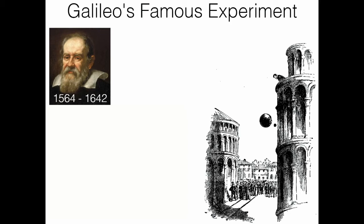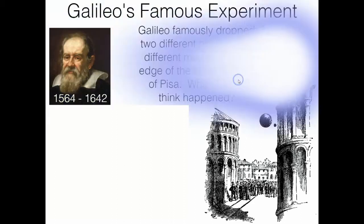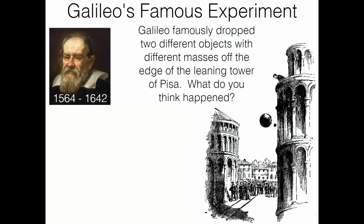Galileo Galilei, right in the height of the Renaissance and early Baroque period, was an amazing scientist. We give him credit for the telescope and many other things in physics. One in particular pertains to us today: Galileo's famous experiment involved dropping two different sized objects with different masses off the Leaning Tower of Pisa in Italy. Most people thought the larger object with more mass would hit the ground first. Galileo theorized that was not true — both objects, regardless of mass, would hit the ground at the same time.